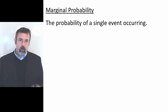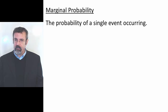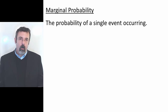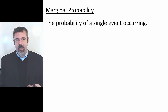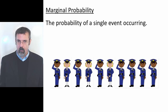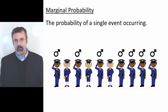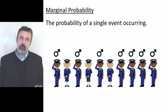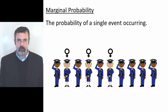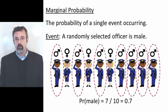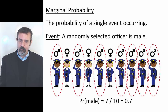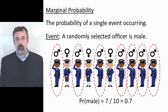A marginal probability is the probability of an event occurring. For example, suppose we have 10 police officers, 7 of whom are male and 3 of whom are female. The marginal probability of selecting a male at random is 7 out of 10, or 70%.